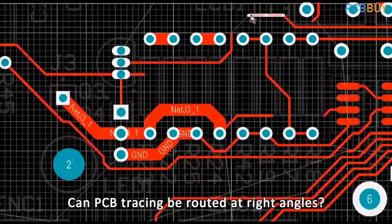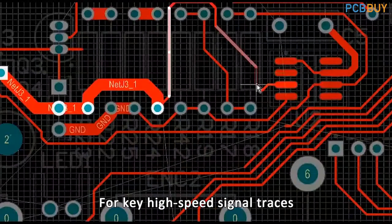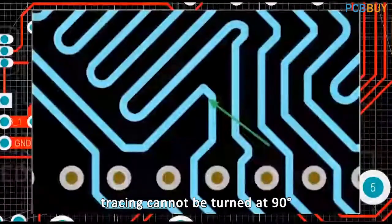Can PCB tracing be routed at right angles? Many PCB design guides point out that for key high-speed signal traces, tracing cannot be turned at 90 degrees.